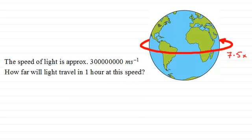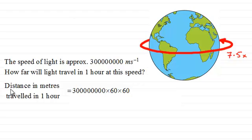Well the sum that we would have to do would be this. The distance in metres travelled in one hour would be 300 million times 60, which would tell us the distance travelled in one minute, and then times another 60, which would tell us the distance travelled in one hour.